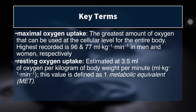Maximal oxygen uptake refers to the greatest amount of oxygen that can be used at the cellular level for the entire body — also known as VO2 max. The highest ever recorded VO2 max for men is 96 milliliters of oxygen per kilogram per minute, and for women it's 77 milliliters per kilogram per minute. At rest, we estimate we use about 3.5 milliliters per kilogram per minute, and 3.5 ml/kg/min is the equivalent of one metabolic equivalent, or one MET.